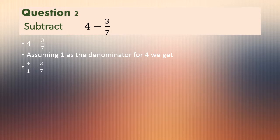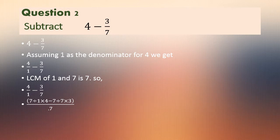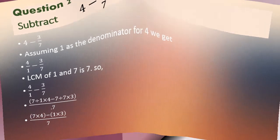Taking the LCM of the denominators 1 and 7, we get 7. Keeping 7 as the common denominator and following the multiplication and division process: 7 divided by 1, multiplied with the numerator of the first fraction 4, minus 7 divided by the denominator of the second fraction 7, multiplied with the numerator 3. On solving, we get 28 minus 3 in the numerator and 7 in the denominator.